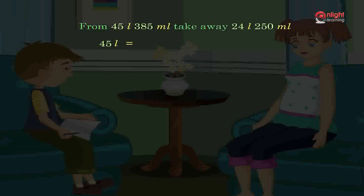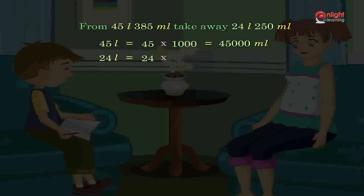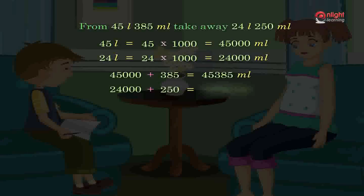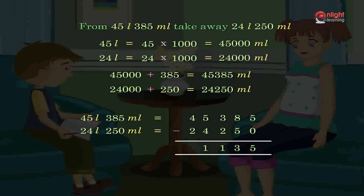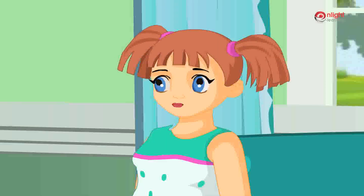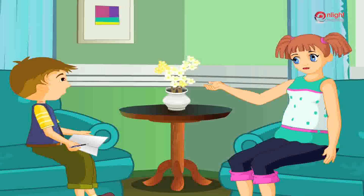45 liters equals 45 multiplied by 1000, which is 45,000 milliliters. 24 liters equals 24 multiplied by 1000, which is 24,000 milliliters. You are really brilliant! Let's try some more.